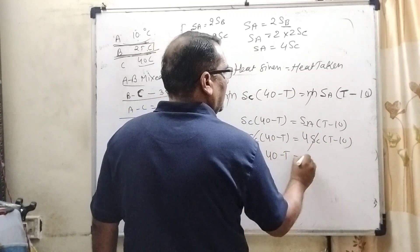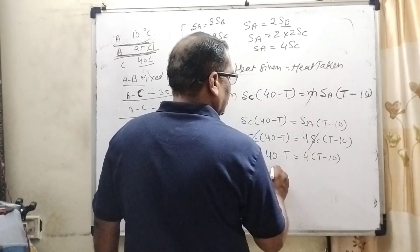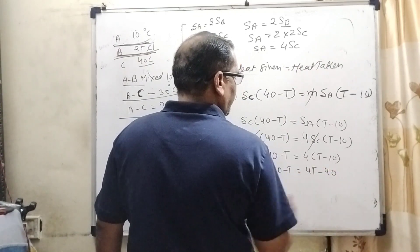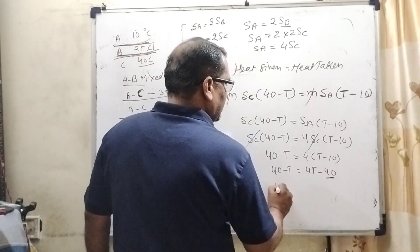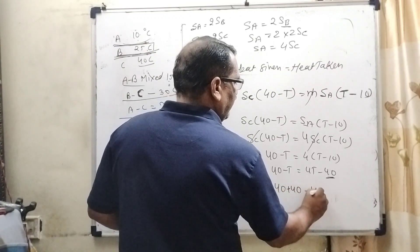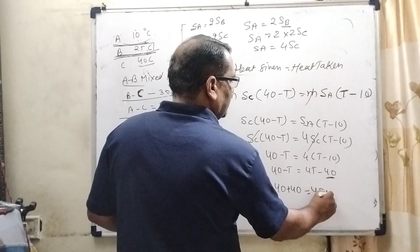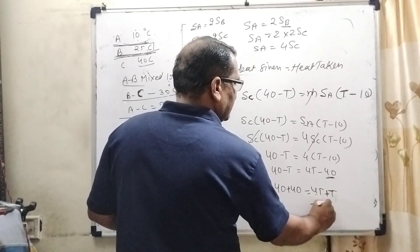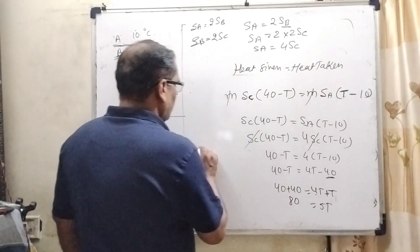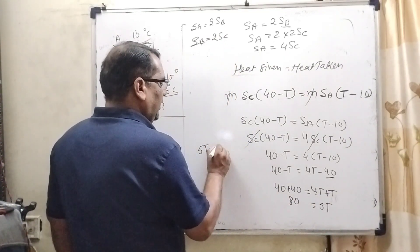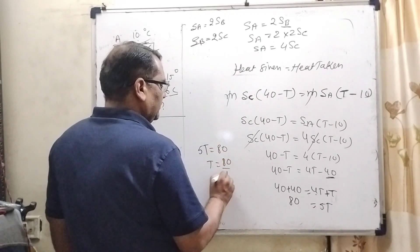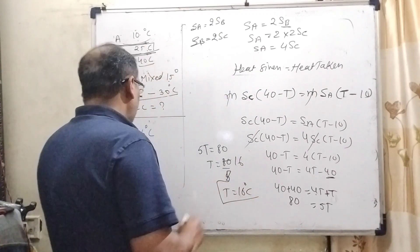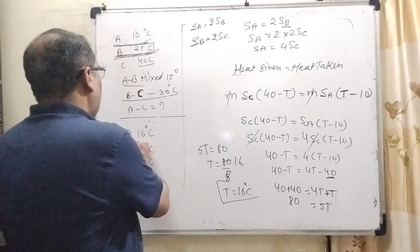After cancelling SC: 40 − T = 4·(T − 10), giving 40 − T = 4T − 40. Transposing: 40 + 40 = 4T + T, so 80 = 5T, therefore T = 16°C. So option A is correct.